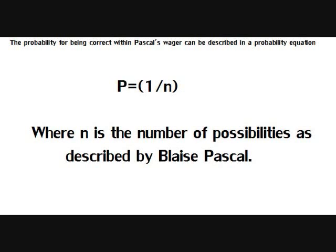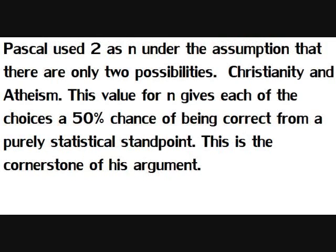The probability for being correct within Pascal's Wager can be described in a probability equation: p equals one over n, where n is the number of possibilities. This is what Blaise Pascal set out. Pascal used 2 as n under the assumption that there are only two possibilities — Christianity and atheism. This value for n gives each of the choices a 50% chance of being correct from a purely statistical standpoint. This is the cornerstone of his argument.